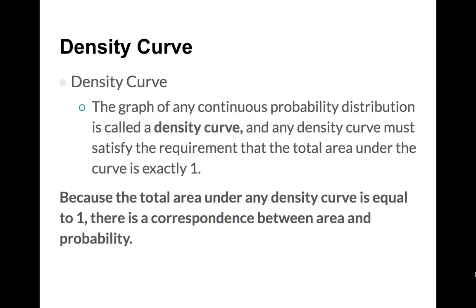Before we can talk about any of these things, we need to talk about what's called a density curve. In our last lesson, we talked about discrete probability distributions, which brought us to binomial probability distributions and binomial random variables. But those had discrete outputs or discrete possible values. A density curve is for a continuous random variable, and the special thing about a density curve is that the area under the curve is exactly 1, which gives us a nice correlation between area under the curve and probability. That's how we actually do probabilities for continuous random variables — we find the area under the density curve for a specific region.